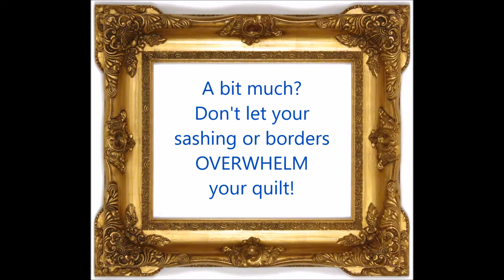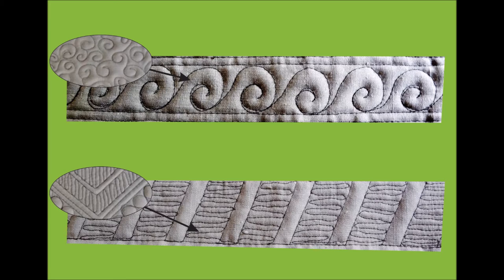You want to think of sashing and borders as a frame around your quilted area. You don't want it to overwhelm it, you want it to enhance it. This actually looks like something that you would get in a picture frame. That's what you're looking for.